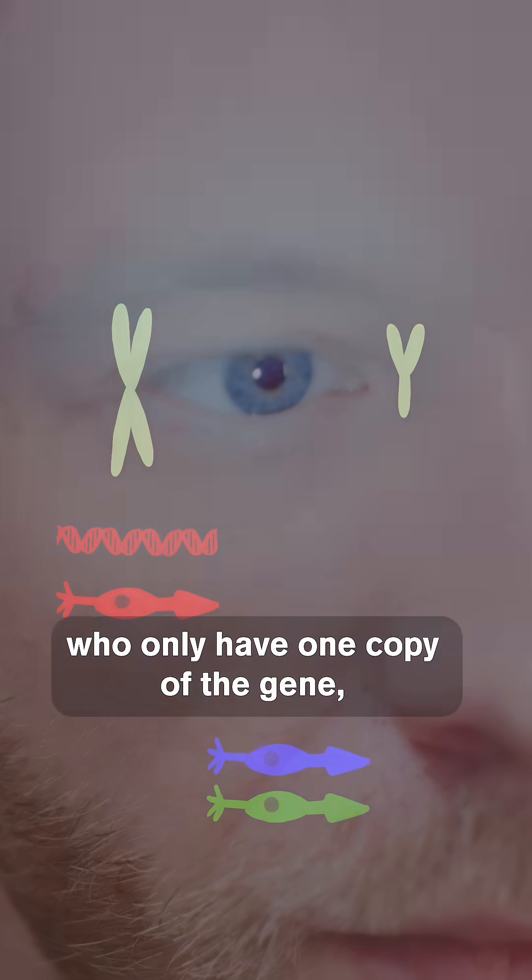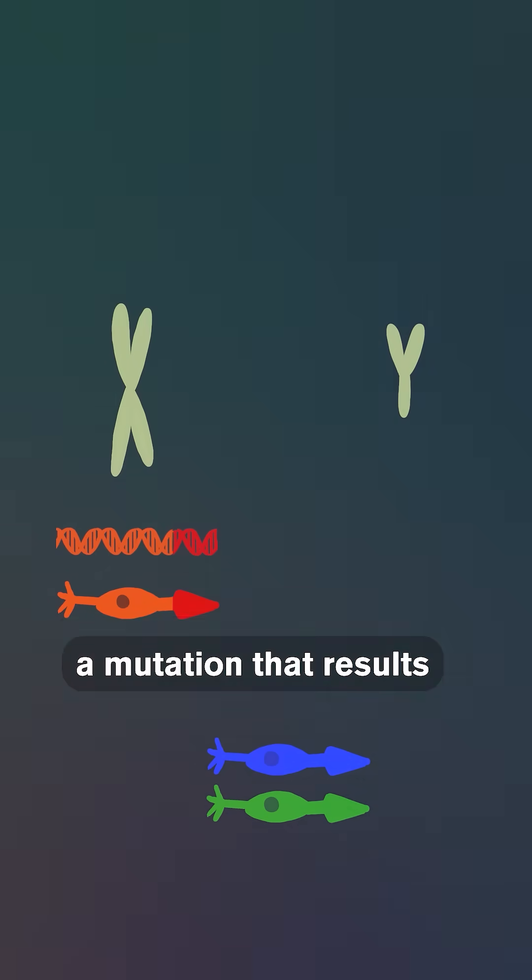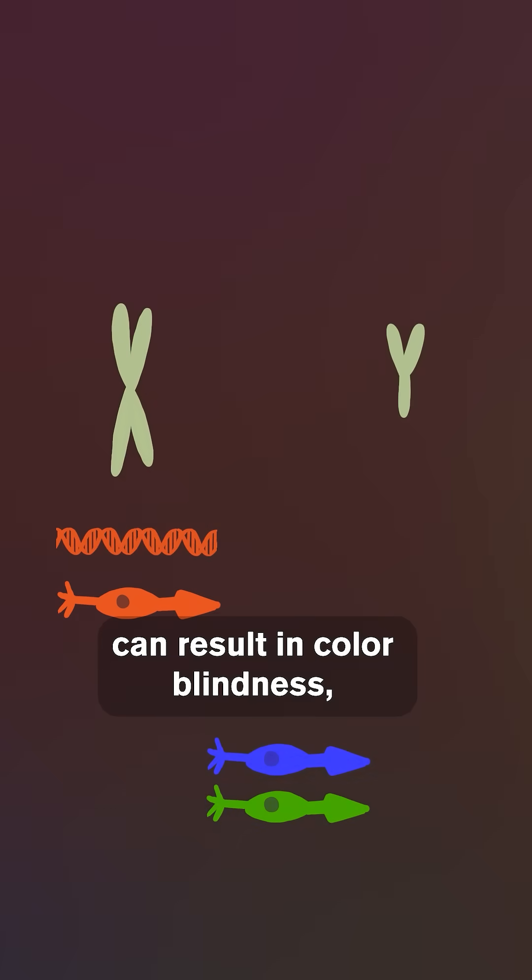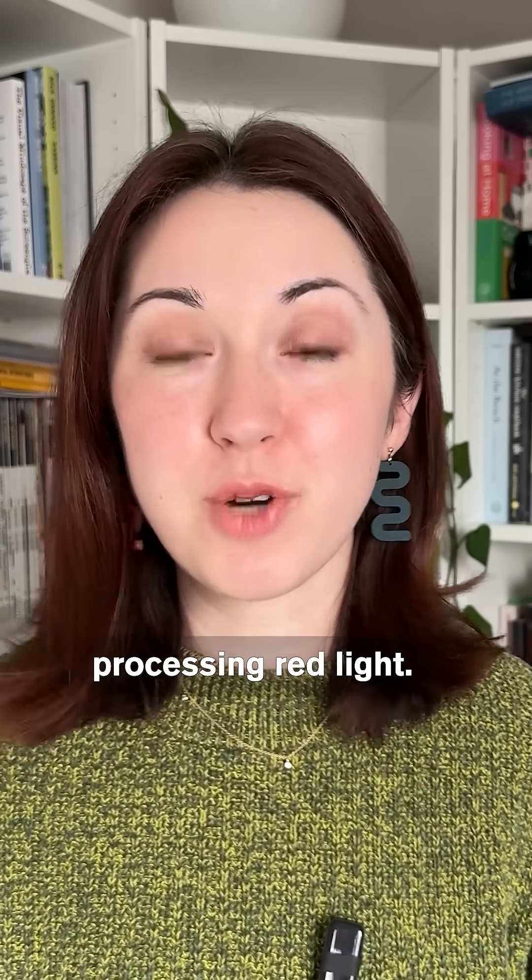For humans with XY chromosomes who only have one copy of the gene, a mutation that results in a new type of cone can result in colorblindness, since they may have trouble processing red light.